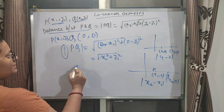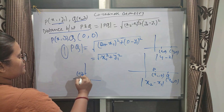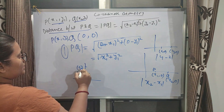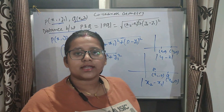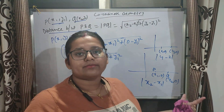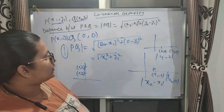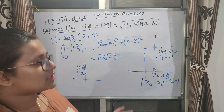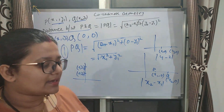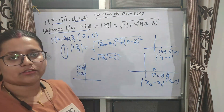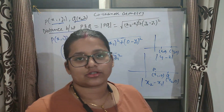The same applies whenever points are on the y-axis: coordinates are (0, y₁) and (0, y₂), and the distance is |y₁ - y₂| or |y₂ - y₁|. I hope you all understood the distance formula and these special cases. Now I will solve some questions — some of them are proofs.